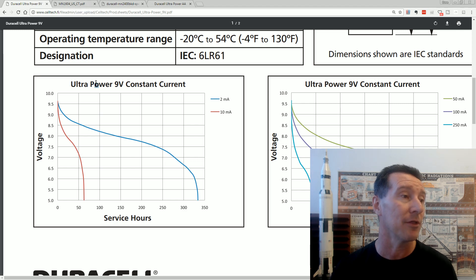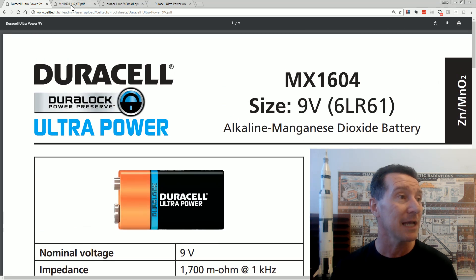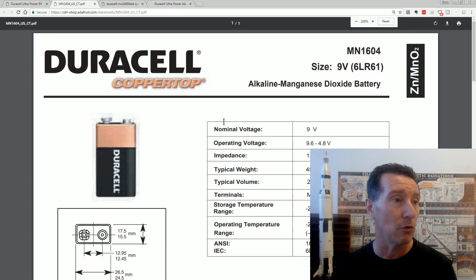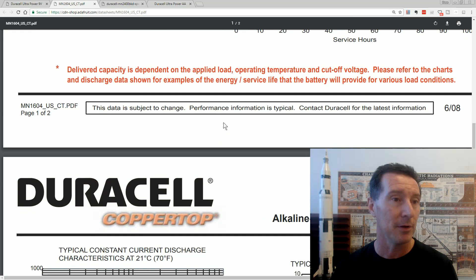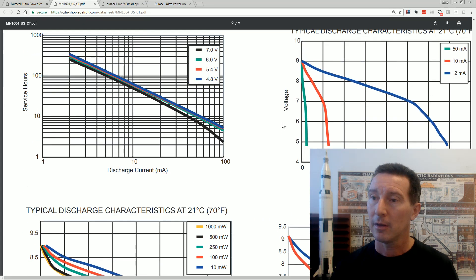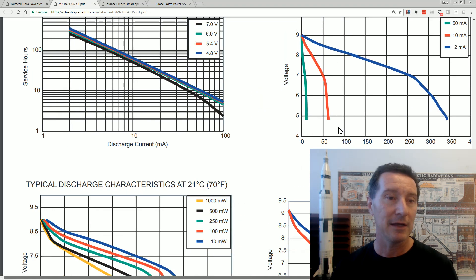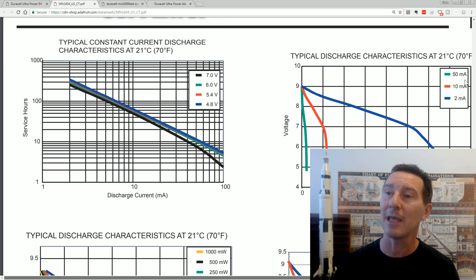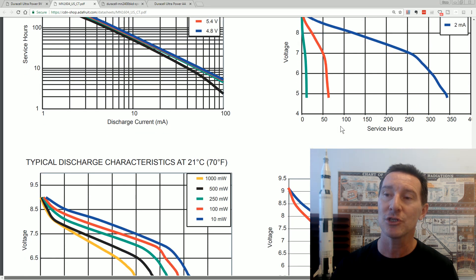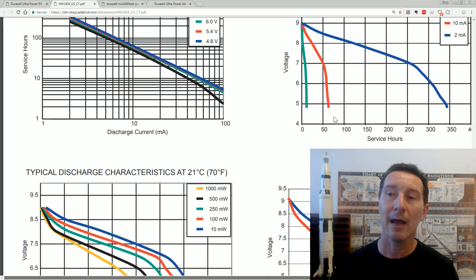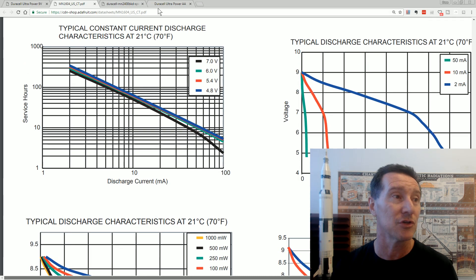And that doesn't matter whether you use the Ultra. There's actually really very little difference between the Ultra and just the regular copper top. If you have a look, here's their curve. It's exactly the same. They're practically identical graphs. So it might be 150 hours service life.